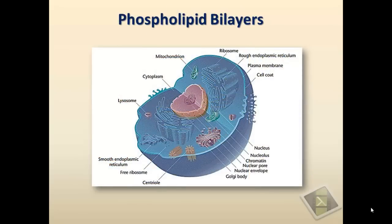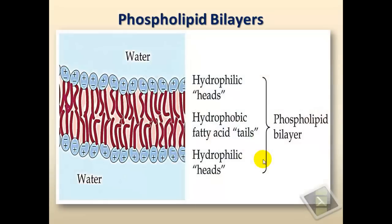Let's start with a quick review of the chemical nature of biological membranes. If we look at this animal cell and zoom in on its plasma membrane, what we will see is a section of the plasma membrane showing the phospholipid bilayer — two layers of phospholipid molecules stacked next to each other, oriented so that the hydrophilic parts face the aqueous environment inside or outside the cell, and the hydrophobic hydrocarbon tails orient towards the inside, away from water.